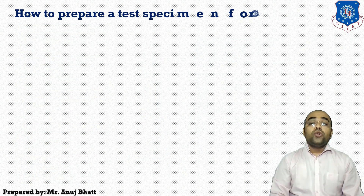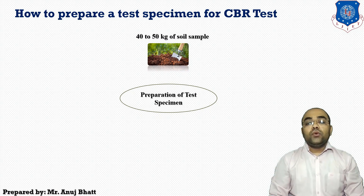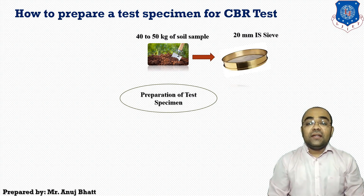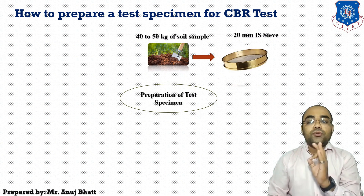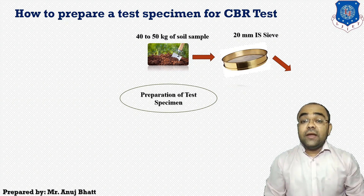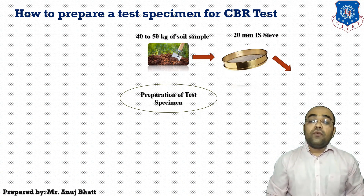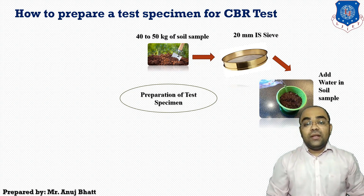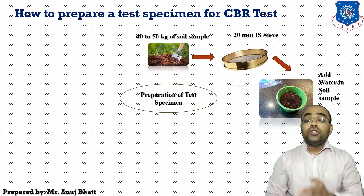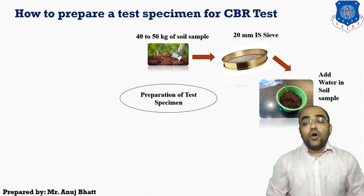For specimen preparation for the CBR test: about 45 to 50 kg of soil is dried and sieved through a 20 mm sieve, and the material passing through this sieve is used for the test. The optimum moisture content and maximum dry density of the soil are determined by the Indian Standard light compaction test. The weight of water required to bring the soil to optimum moisture content is measured and sprinkled over the dry soil.